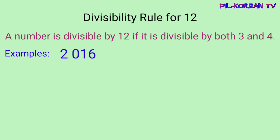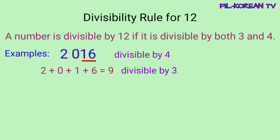2016 — tingnan natin ang number na ito kung divisible by 3 at divisible by 4. I-plus natin yung lahat ng digits: 2 plus 0 plus 1 plus 6 equals 9. Yung sum ng digits ay 9, divisible by 3 yung 9, kaya yung given number ay divisible din ng 3. Ngayon tingnan natin kung divisible din ito ng 4 — titingnan natin yung last 2 digits. Yung number na nabuo ay 16, ang 16 ay divisible by 4. So yung given number na 2016 ay divisible by 4.